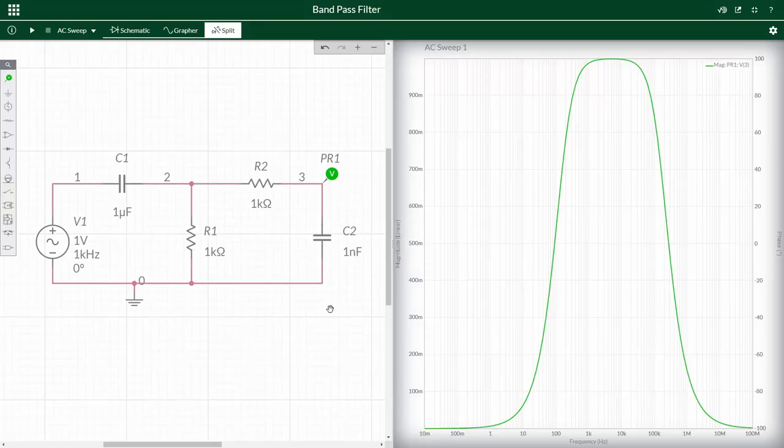Looking back at the simulation, we can see that the high-pass cutoff frequency at 70% is 159 hertz, as expected, and that the low-pass cutoff frequency is 159 kilohertz, as expected. This kind of filter has all sorts of uses, such as in radio receivers, where they only want to pick up a certain range of frequencies.